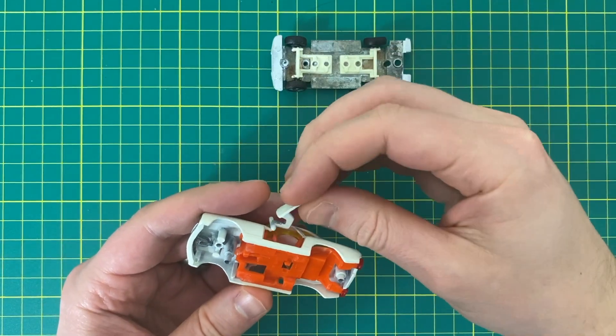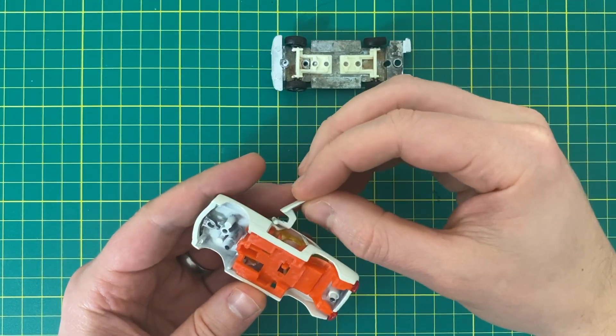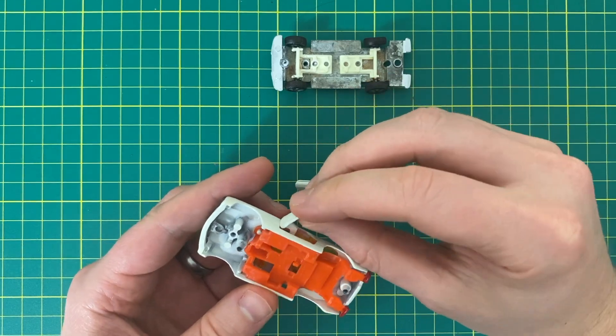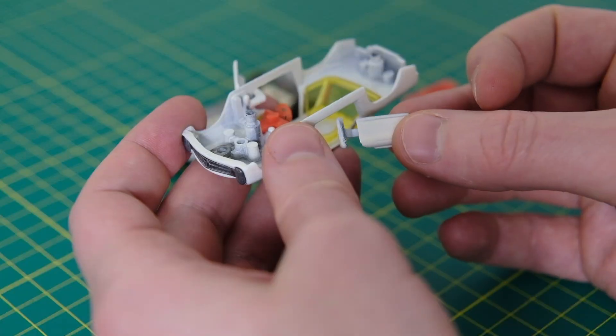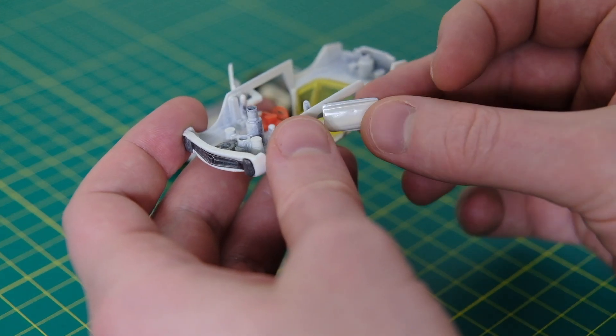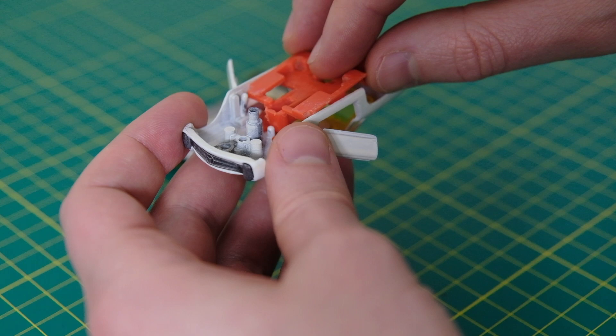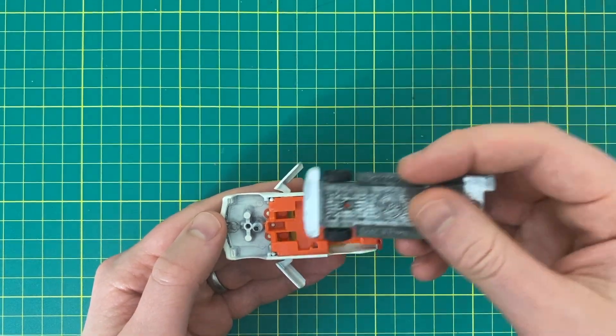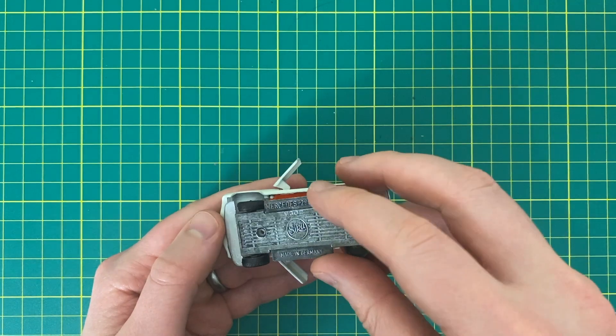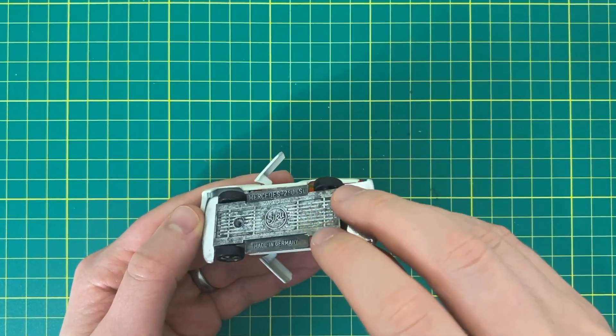So I tried to be smart and save some time by using the interior to hold the doors in place but I ended up removing the interior altogether. With the doors balancing precariously on either side I then gently refit that big chunk of plastic. Lastly the base with wheels attached is refitted.